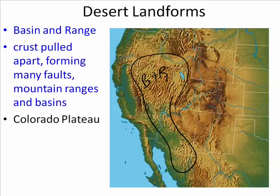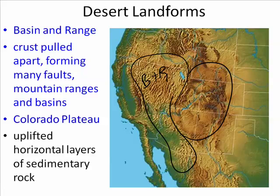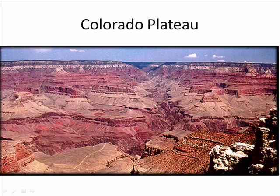The next desert area in the United States is the Colorado Plateau. A plateau, by definition, is a high flat area. The Colorado Plateau was formed when miles of horizontal sedimentary rock were uplifted. In this picture of the Colorado Plateau with the Grand Canyon through it, you can see the rocks are very horizontal and tend to be very red because they contain hematite.